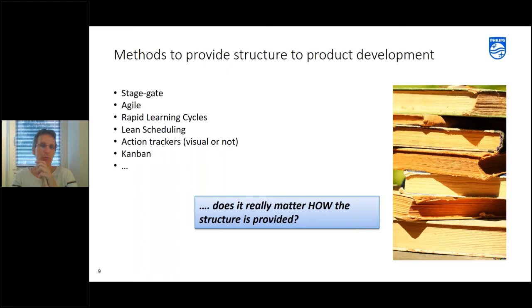Then let's talk about the methods to provide structure. So let's talk about how do we then apply structure in product development. So you certainly know a few ways to apply structure and probably you have tried many of them and you have them in your own company or maybe you even coach on this type of thing. So a very common structure in product development is of course the stage-gate model. Also what gets more and more common is the agile model or things like the Scrum framework. You also have companies that work with rapid learning cycles or lead scheduling. What is older but still working a lot is action trackers. They are visual or sometimes even not. Or problem Kanbans or that type of thing. So I'm sure you know many more.